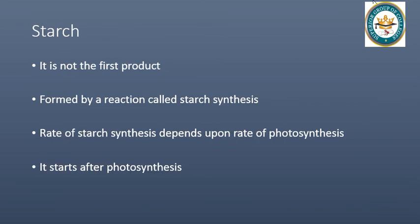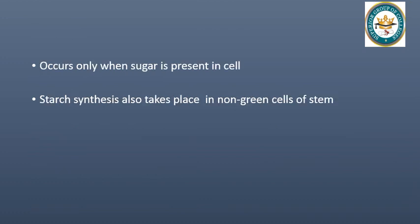Starch is not considered a first product of photosynthesis. There is a process called starch synthesis. The process of starch synthesis is related to the rate of photosynthesis — starch synthesis depends on the rate of photosynthesis. The end product of photosynthesis, if it is hexose, is converted into the form of starch. If the rate of photosynthesis is high, then the rate of starch synthesis is also high. Starch synthesis starts when sugar is present in the cell — that is, when carbohydrates are created in the process of photosynthesis.